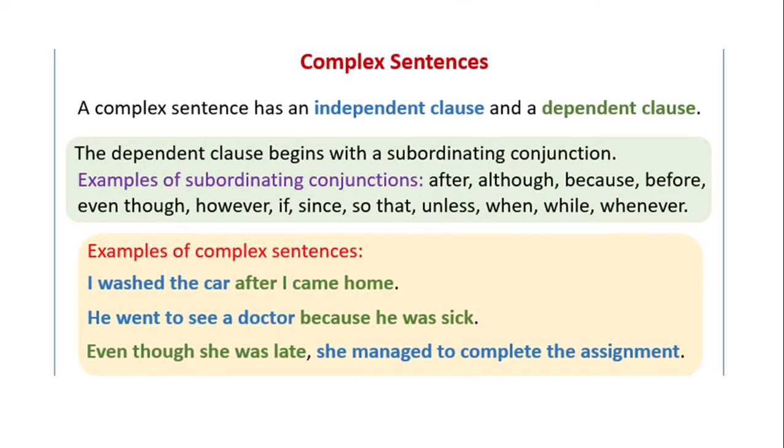So the complex sentence has an independent clause and a dependent clause. It starts with a conjunction like after, although, because, before, even though, or however. I washed the car after I came home. He went to see the doctor because he was sick. Even though she was late, she managed to complete the assignment. If we had just the part in green, it would be a dependent fragment. But the parts in blue, I washed the car, he went to see the doctor, she managed to complete the assignment, those could stand on their own by themselves.